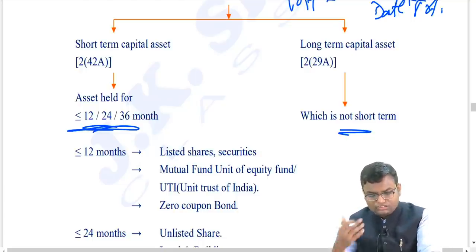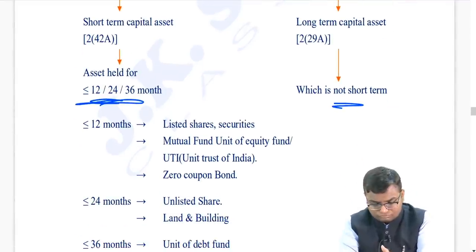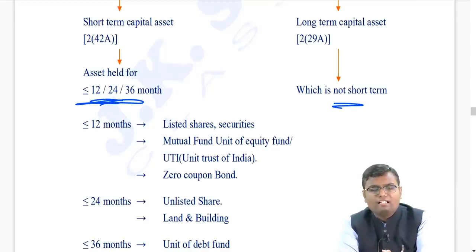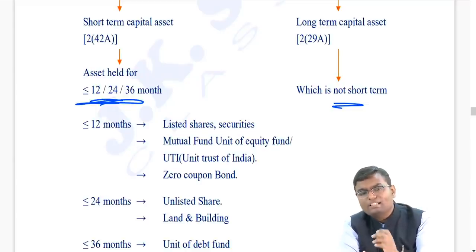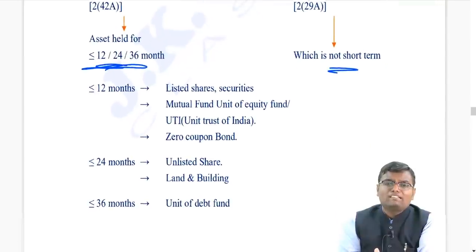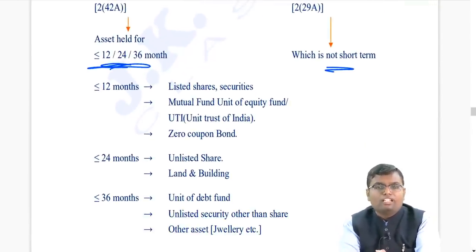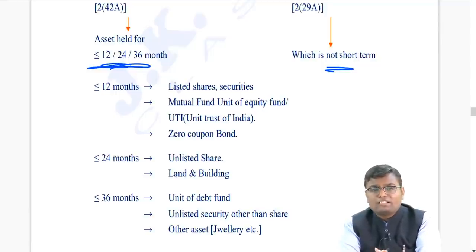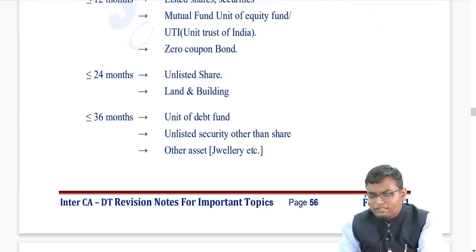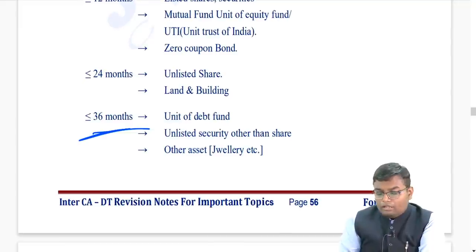For listed shares, any securities, equity-oriented mutual fund units, Unit Trust of India units, or zero-coupon bonds: the threshold is 12 months. For land, building, or unlisted shares: 24 months. For any other asset - units of debt fund, hybrid fund, unlisted securities (other than shares), jewelry, archaeological collections, block of assets, etc.: 36 months. If held for less than or equal to the threshold, it is short-term; otherwise, long-term.